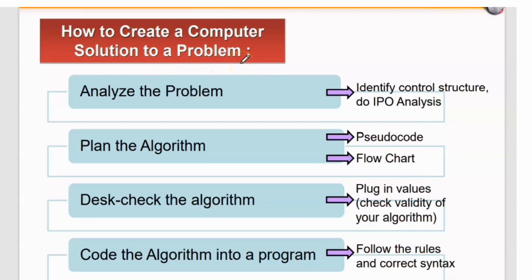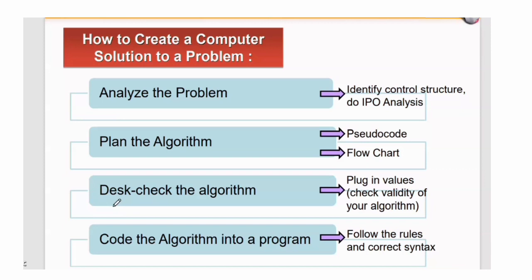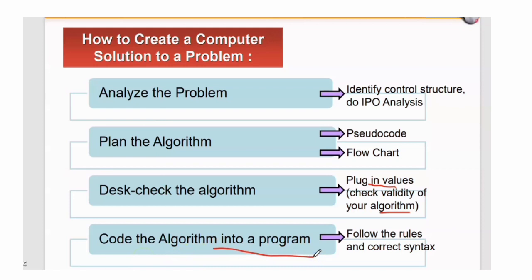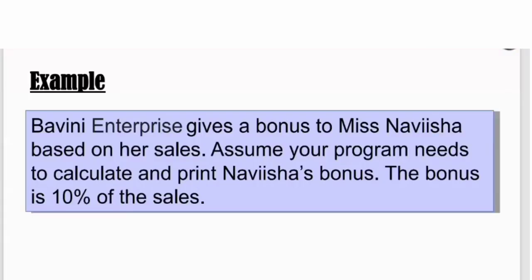To build coding using a sequence control structure and create a computer solution, follow these guidelines. First, analyze the problem: identify the control structure and do the IPO analysis — Input, Process, Output. Second, plan the algorithm using pseudocode or a flowchart. Third, check the algorithm by plugging in values to verify validity. Fourth, code the algorithm into a program following correct syntax rules.